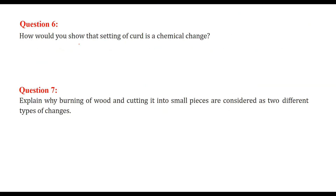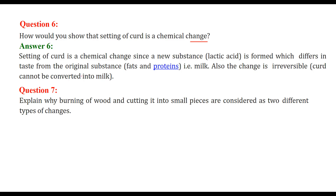How would you show that setting of curd is a chemical change? The setting of curd is due to lactic acid produced by lactobacillus. It is a chemical change since a new substance - lactic acid - is formed, which differs in taste from the original substance. The fat and proteins change into lactic acid, and the change is irreversible because you cannot convert curd back into milk.